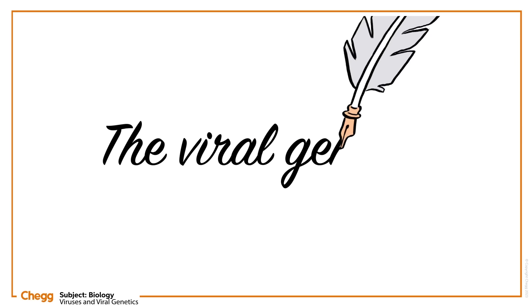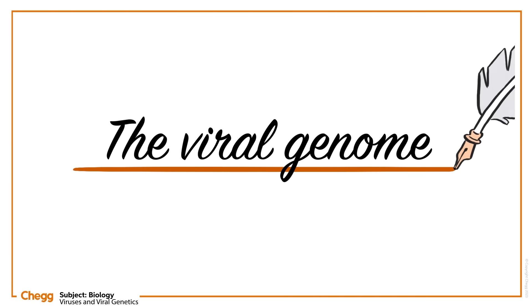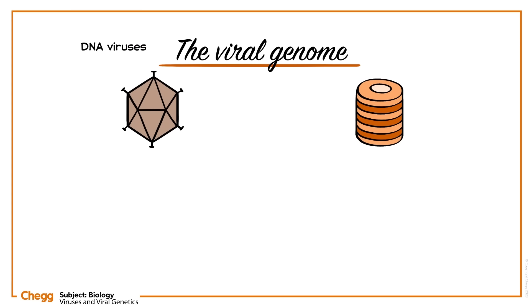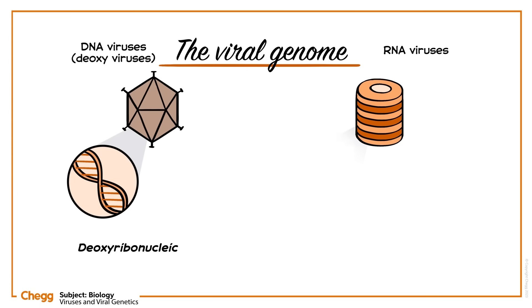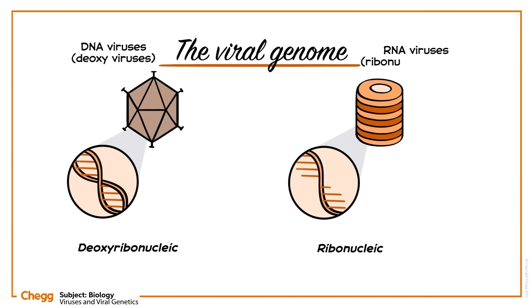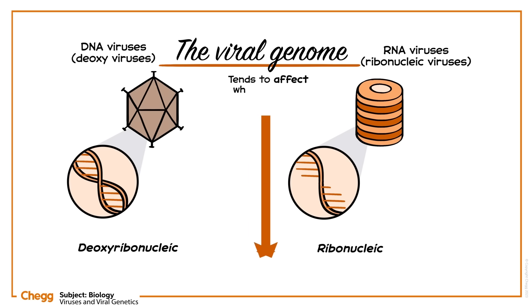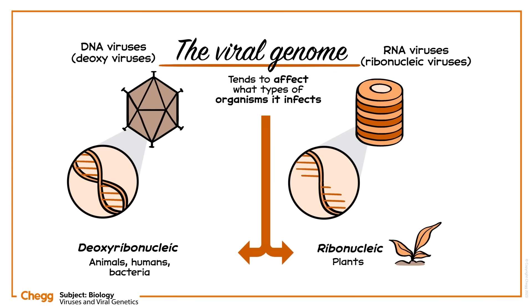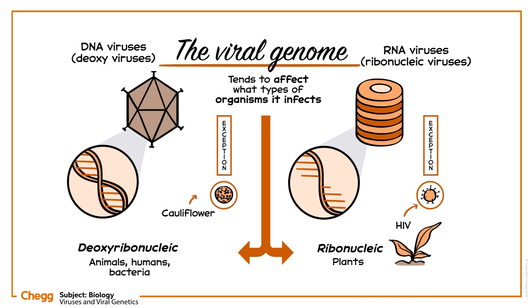Let's look now at the viral genome — after all, this is the brains of the whole operation. Viral genomes contain either DNA or RNA as their genetic material. Viruses with DNA genomes are classified as deoxyviruses, because of deoxyribonucleic acid, and viruses with RNA genomes are helpfully called RNA viruses. The type of viral nucleus tends to affect what types of organisms it infects. Most DNA viruses tend to infect animals, humans, and bacteria, and almost all plant viruses are RNA viruses. Some notable exceptions are HIV, which infects animals but has an RNA nucleus, and the cauliflower mosaic virus, which only infects certain plants and has a DNA core.